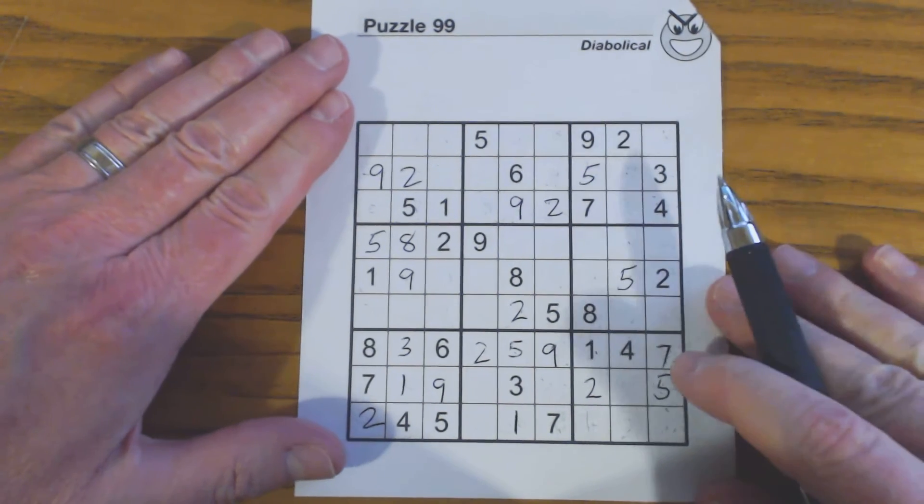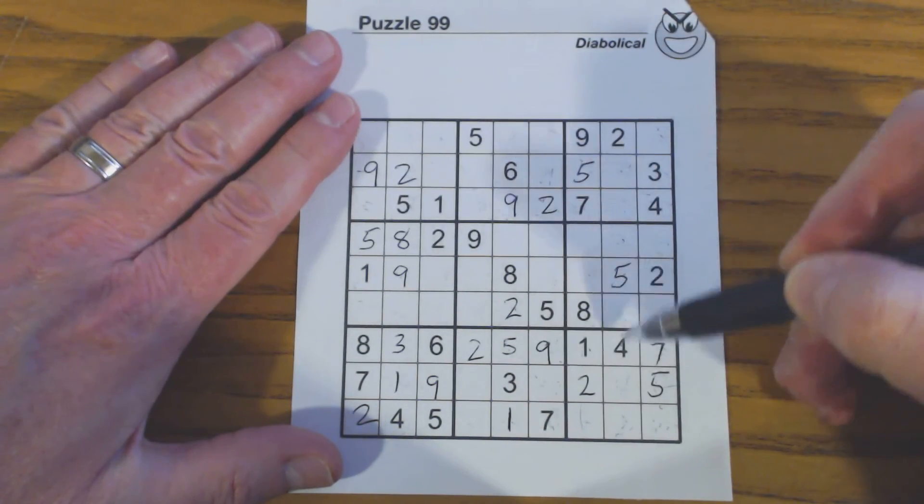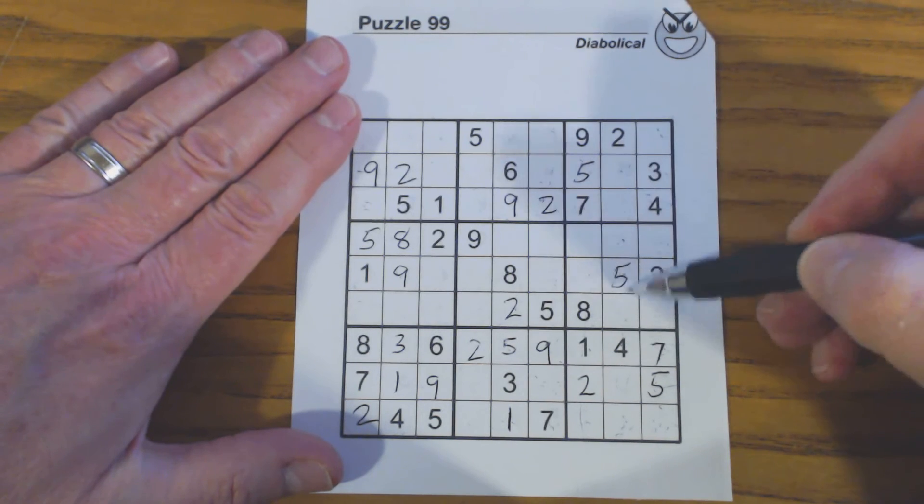You notice in this column here we've got only three numbers: 2, 5, and 4.